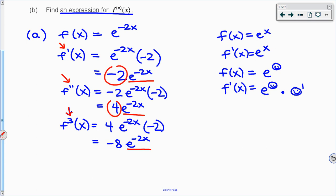-2, 4, -8. We can anticipate what's going to be next is 16. Each time we're multiplying it by a 2 and our signs are alternating. So what we have to realize is that to obtain that -2, that 4, and that -8, it's the -2 from our chain rule raised to the power of the derivative you're trying to find.